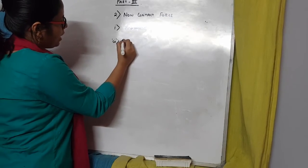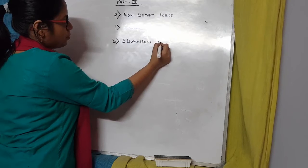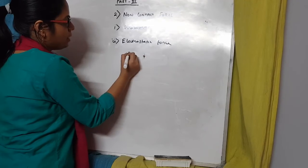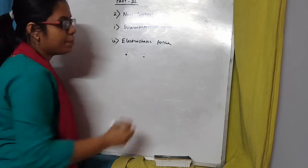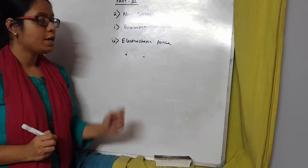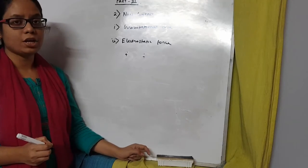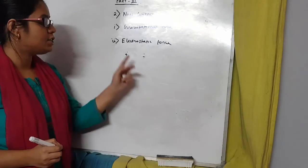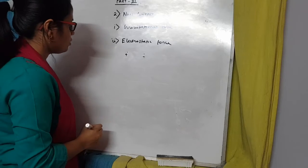Another non-contact force is electrostatic force. When we have two charges — if both are positive, they repel each other; if one is positive and one is negative, they attract each other. This force of attraction or repulsion between two charges, whether like or unlike, is known as electrostatic force. This force also does not need the charges to be in direct contact; even if the charges are separated, the force will act.